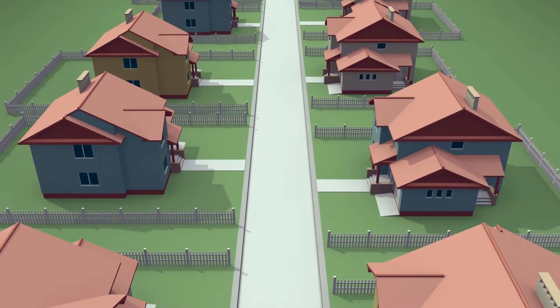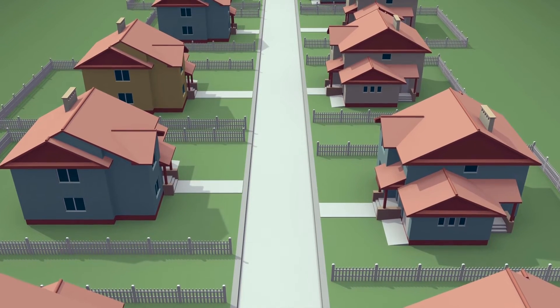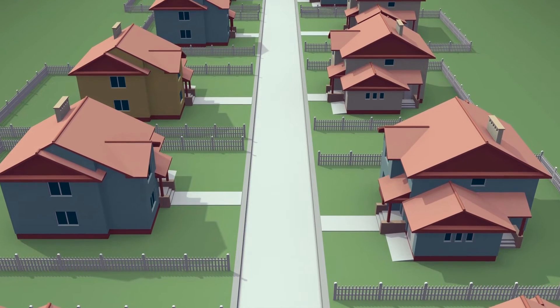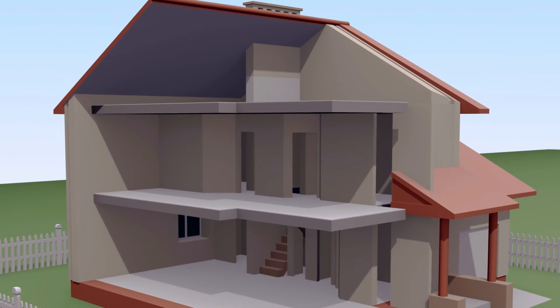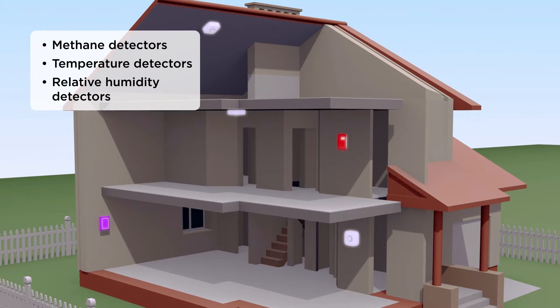Next, we tested how blends of hydrogen up to 20% by volume and methane affect gas dispersion in residential settings to understand the optimal placement of methane detectors and to ensure proper alarm setting thresholds.